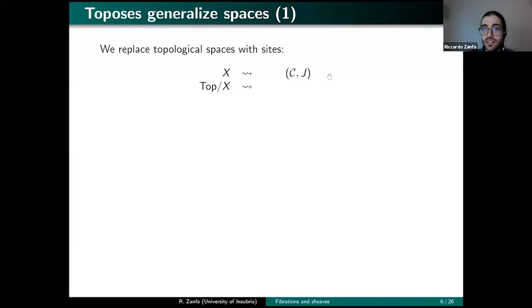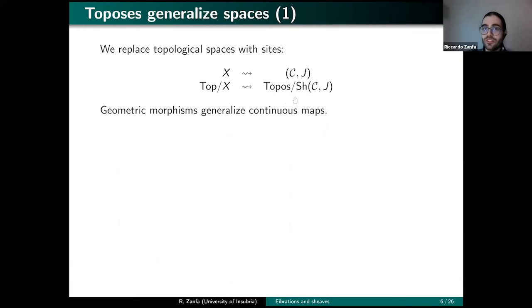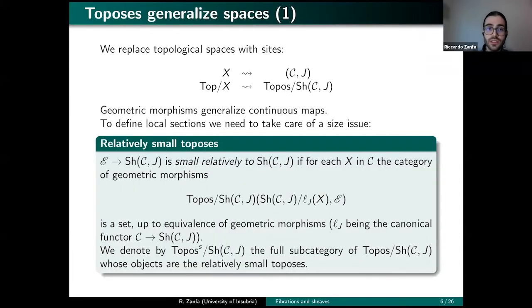Not only do toposes generalize topological spaces, but geometric morphisms naturally generalize continuous maps. There is a size problem, however: if we try to define gamma as a contravariant hom-functor, hom-sets between toposes are always proper classes, not sets. To get around this, we introduce relatively small toposes. A topos E over the base topos Sh(C, J) is small relative to Sh(C, J) if for each object X in C, the class of geometric morphisms over the base from the slice topos Sh(C, J)/y(X) to E is, up to equivalence, a set.